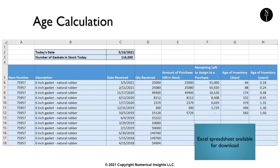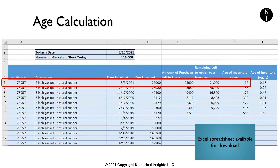Since we are using a FIFO system, we know that what we have in stock is our youngest inventory, but we don't really know how young or old our existing inventory is. To calculate the age of what we have in stock, we start with the most recent purchase shown on line 6. If we have 116,000 in stock and our most recent purchase was 25,000, then we know we have 25,000 gaskets that have been in our storage for 66 days. This is a simple subtraction in Excel of the March 5 purchase date from today's date of May 10. This leaves 91,000 gaskets in inventory where we have not yet assigned an age.